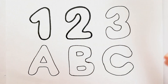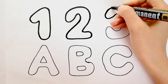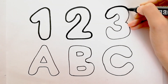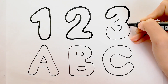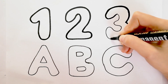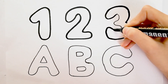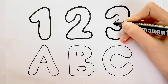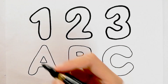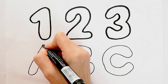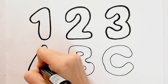A, B, C, D, E, F, G, H, I, J, K, L, M, N, O, P, Q, R, S, T, U, V, W, X, Y, and Z. Now I know my ABCs, next time won't you sing with me?